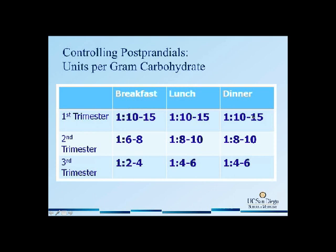In the second trimester, I lower that ratio to about 6 to 8 for breakfast, 8 to 10 for lunch, and about 8 to 10 for dinner. Remember that because of the insulin resistance in the morning, you tend to increase your insulin requirements, so breakfast time is usually the largest bolus of insulin given. We use a lower carb ratio in the third trimester as well.